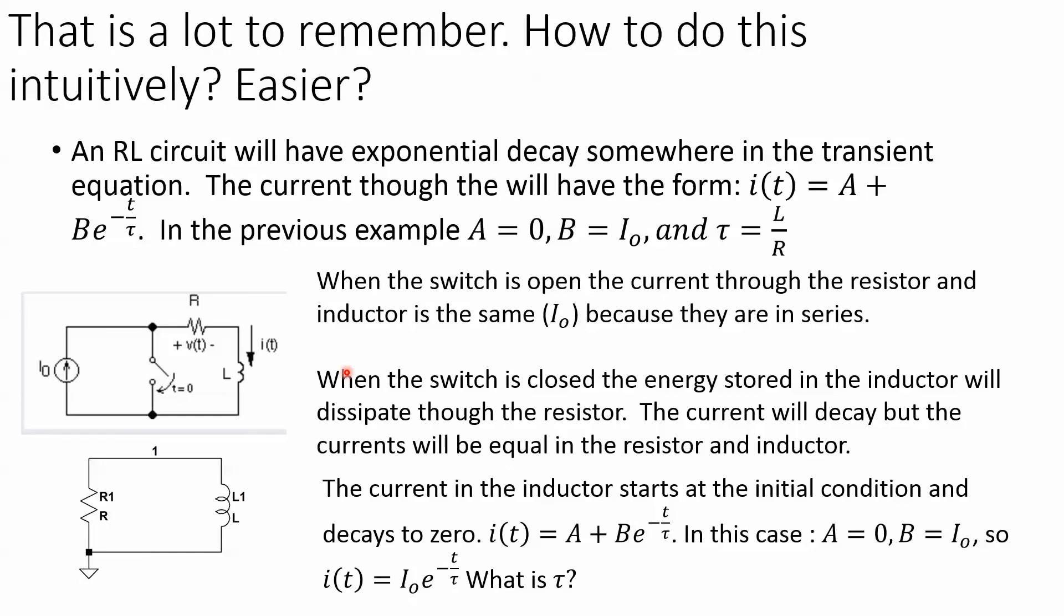Now that is seriously a lot of work just to do one problem, as if you'd never seen it before. But the thing is, once you know RL circuits, you know there's exponential decay. The current is going to have the form some constant plus another constant times the exponential decay.